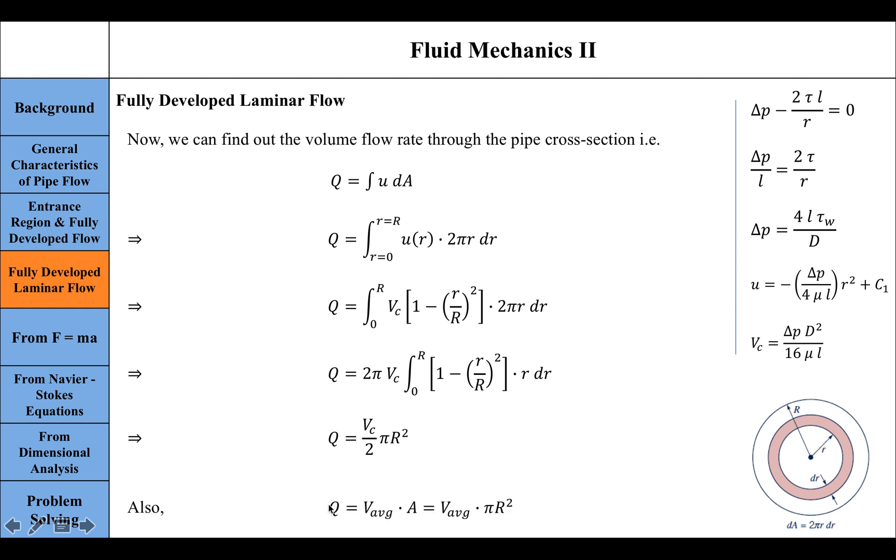We also know that volume flow rate equals the average velocity multiplied by area. The area is the cross-sectional area, πr². We can equate volume flow rate as this term. If we equate both expressions, πr² cancels out, leaving us with average velocity equals centerline velocity divided by two.